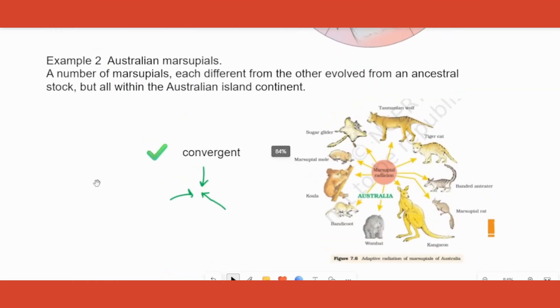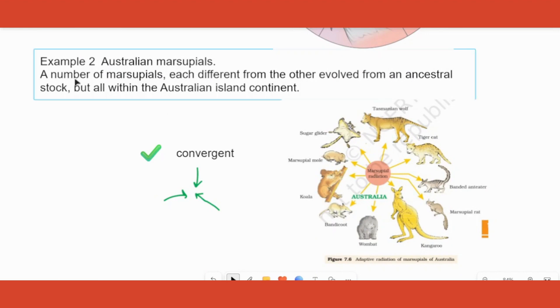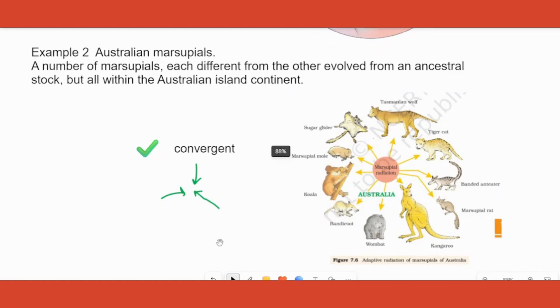First one: Australian marsupials. So marsupials are the organisms which have a pouch. What is the function of the pouch? To carry the young one. So you have to look at what kind of evolution it is. What happened? First of all from a single ancestral stock or ancestral species many different organisms evolved, all of them so different from each other. For example, kangaroo is there, koala is there, wolf is there, cat is there. You can see that from an ancestral stock